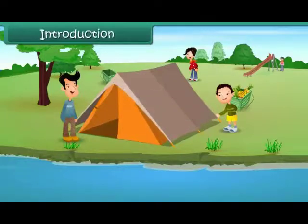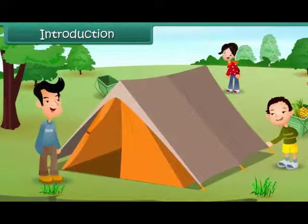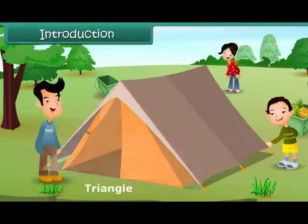Introduction. Vasu has gone camping with his family. He's helping his father pitch tents in an open area near the river. While doing so, he realizes that the tent looks like a triangle.